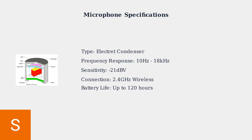Now let's look at the recommended configuration for streaming and content creation. This setup provides optimal audio quality for most users. For streaming, use +6dB gain, an 80Hz high-pass filter, a 15kHz low-pass filter, medium noise suppression, and a 2-to-1 compressor ratio with a -20dB threshold.